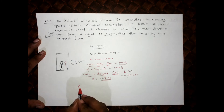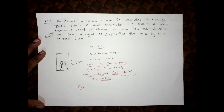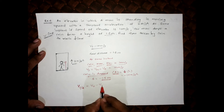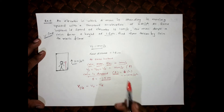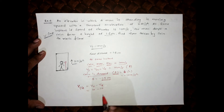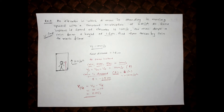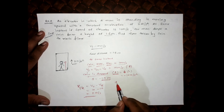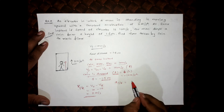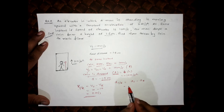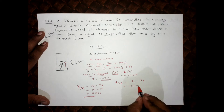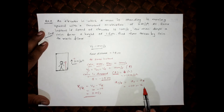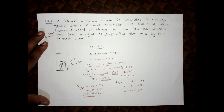What is the velocity of the coin with respect to the elevator? Velocity of coin with respect to elevator equals velocity of coin minus velocity of elevator. Both are going up at 10 meter per second, so relative velocity is zero. The acceleration of coin with respect to elevator equals acceleration of coin minus acceleration of elevator, which is (−10) − (+2) = −12 meter per second square.